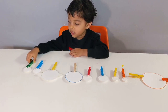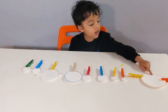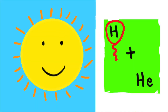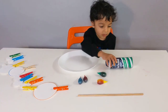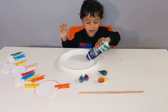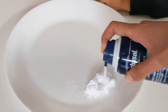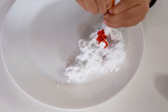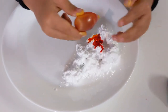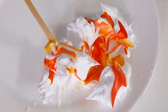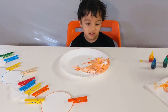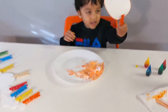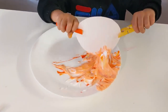All the planets revolve around the Sun! Good job! What is Sun made up of? Hydrogen and Helium! Alright! Let's put some shaving cream in the space. When we mix red and yellow, it becomes orange. Good job! Now you want to colour the sun? Yeah! Alright! Let's pick up the sun and now dip it in the shaving cream!